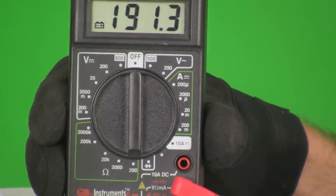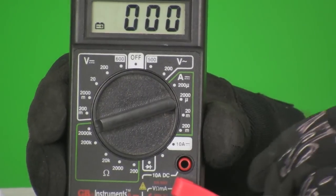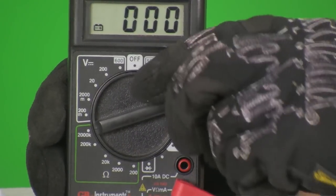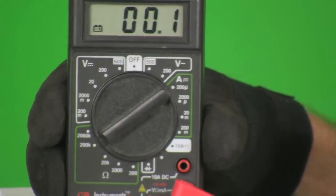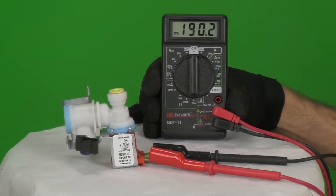For an accurate resistance reading, you must have your meter set to the proper scale of measurement. You may find scales from 200 to 20,000 K, or 2 million. This water valve solenoid measures 190 ohms of resistance.